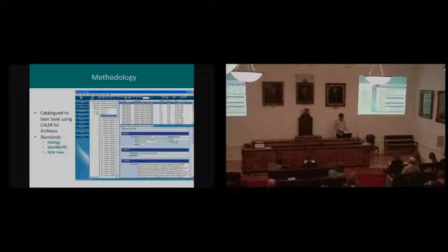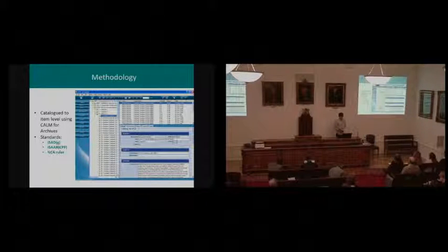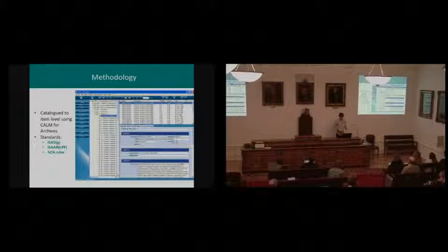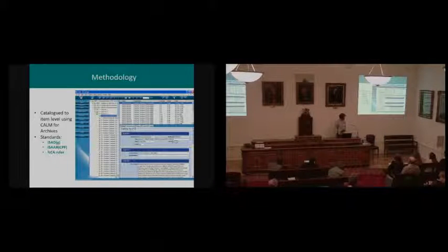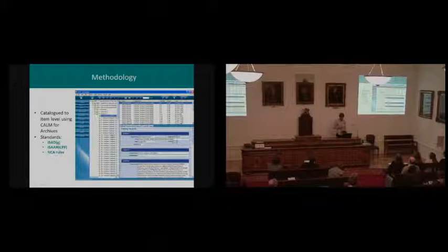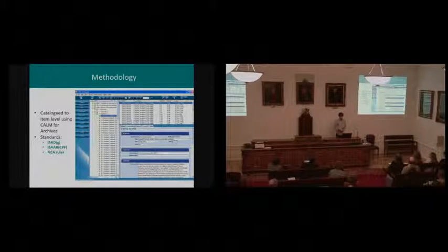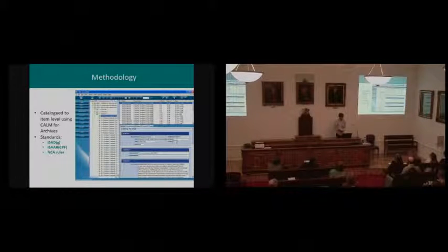Onto the methodology of how I went about cataloging this collection. It was cataloged using CALM for archives, which is one of the standard archival description software packages and one of the most frequently used in the UK. It works on a field basis. All of the fields you can see down here are fully searchable, so it's very good for accessing information. And all of these fields are based around the ISAD-G standard, the international standard for archival description, so it guarantees uniformity, consistency, and clarity.